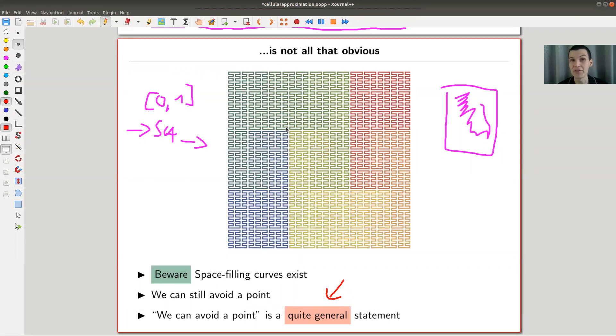So it's not so obvious why you should be able to do this, keeping in mind that you can have really crazy curves, right? The problem is, as usual, our brain, or at least my brain, can't imagine how crazy a curve actually can be.